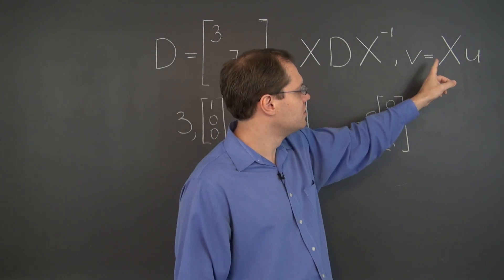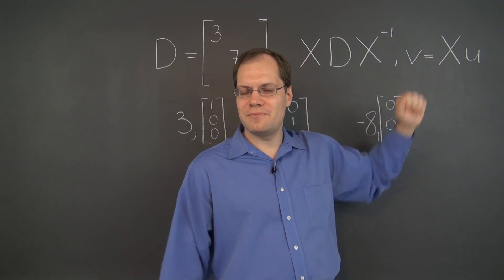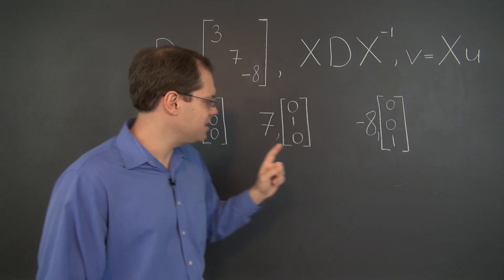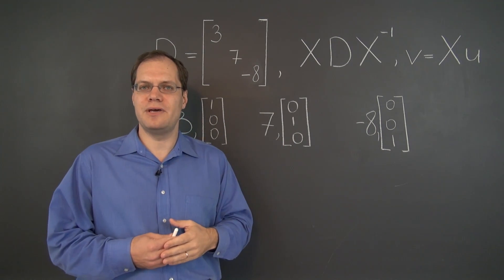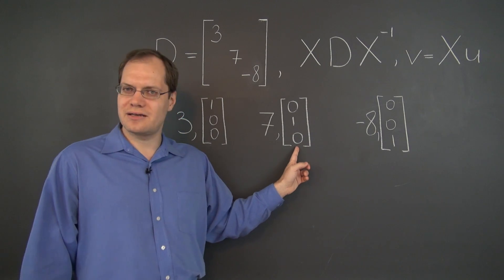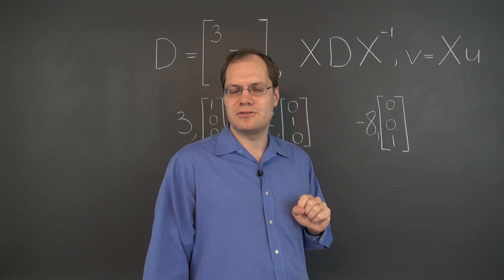So whatever X we choose, the corresponding V will be the columns of the matrix X, right? Because any matrix multiplied by this vector, the result is the first column of that matrix. This will produce the second column of that matrix, and this will produce the third column of that matrix.